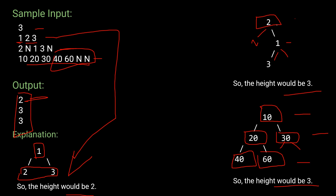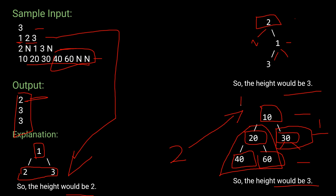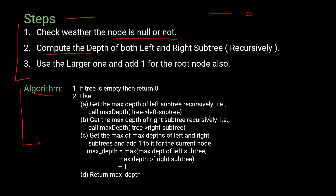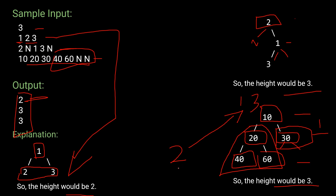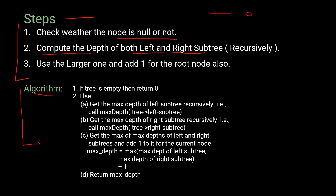For example, the height of the left subtree of node 10 is 2 and the height of the right subtree is 1. The maximum height propagates upward to the parent. Step 3: use the larger of the two subtree depths and add 1 for the current root node, giving a total height of 3.